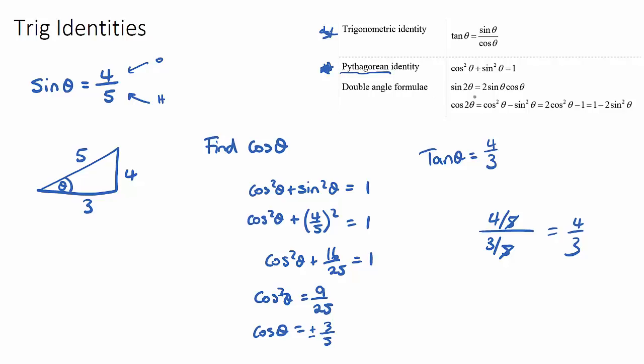Now, the double angle formulas are a little bit trickier. The proofs of these are quite difficult, and we don't need them for most of your IB math exams. So this is just saying that if we want to find sin(2θ), we need to use a formula to solve that. And it's just going to be 2 × sin θ × cos θ.